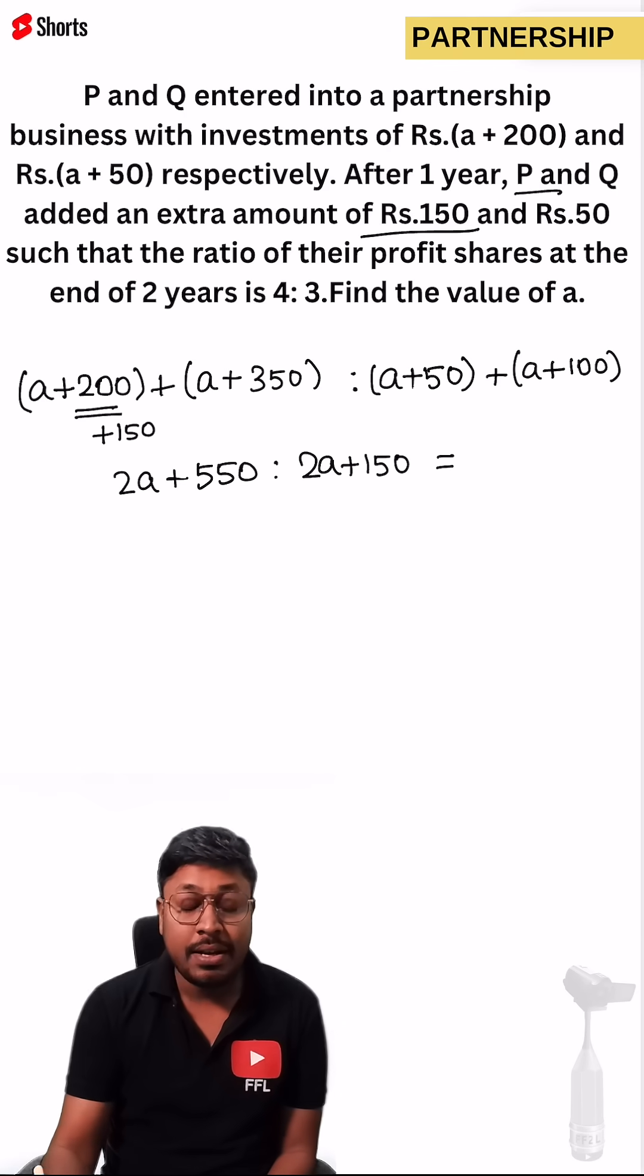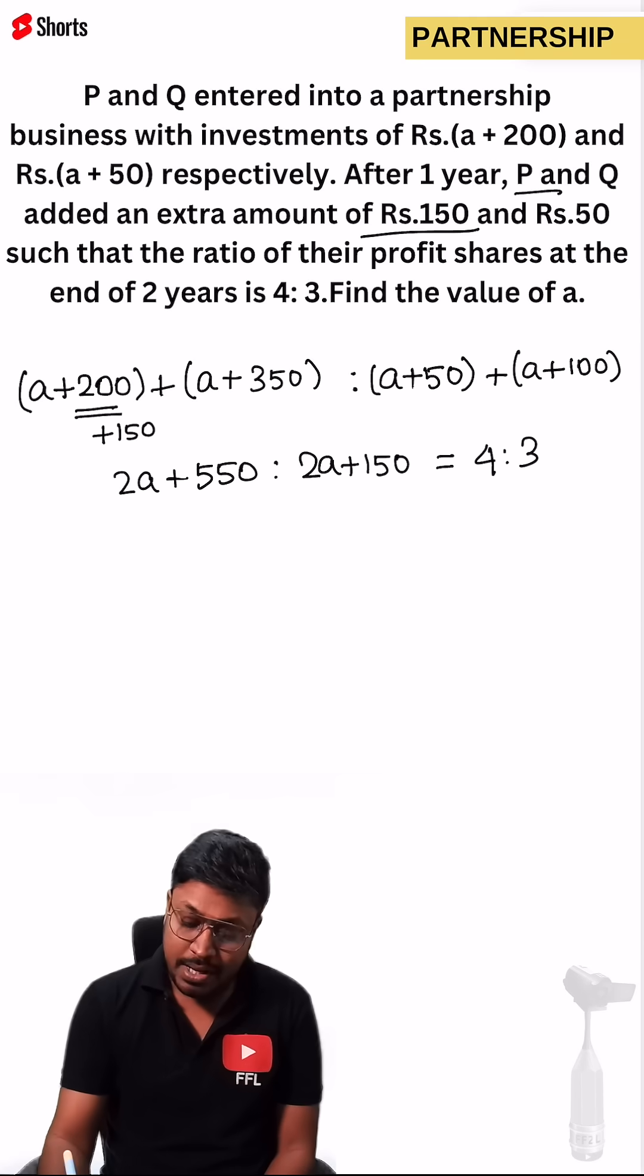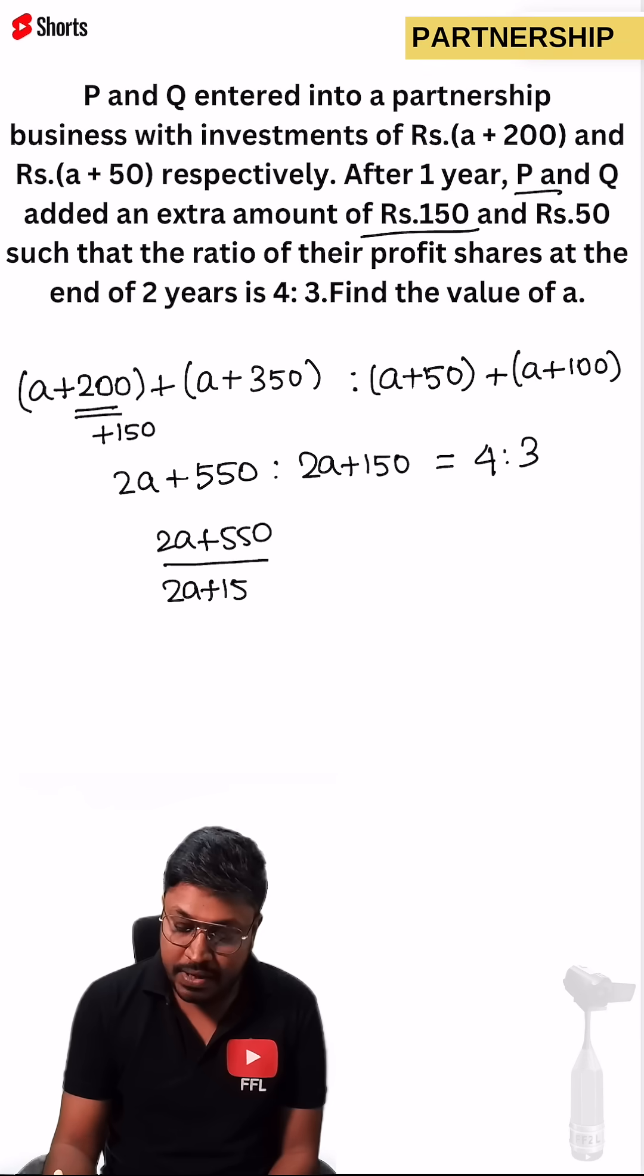So now according to the question, they have given the profit ratio as well, which is 4 is to 3. So now equated 2A plus 550 divided by 2A plus 150 is equals to 4 by 3. So cross multiply it.